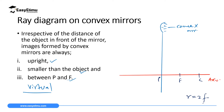Once you know the focal point and center of curvature, you can form the image of any object in front of the mirror. You can use the first ray: a ray parallel to the principal axis from the tip of the object. After reflection, this ray will appear to have come from the focal point F. Since F is virtual, you draw the reflected ray appearing to diverge from F, going in that direction.